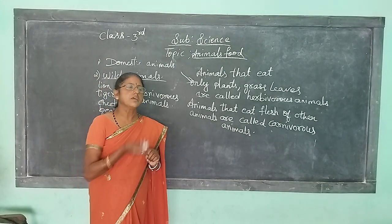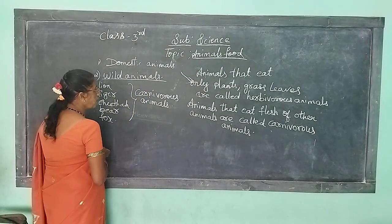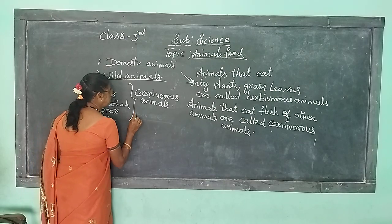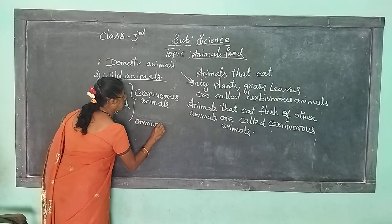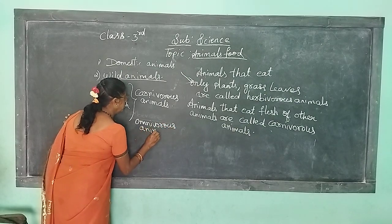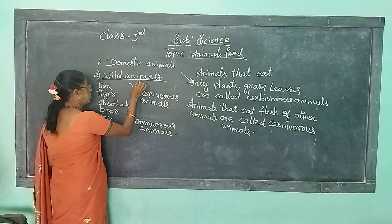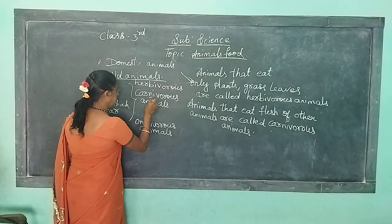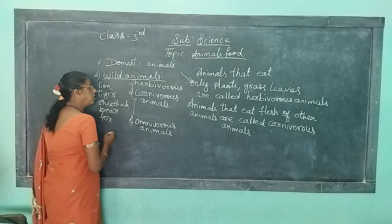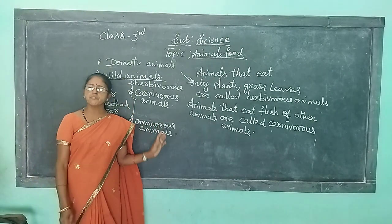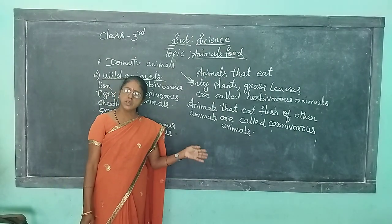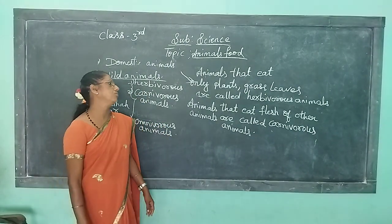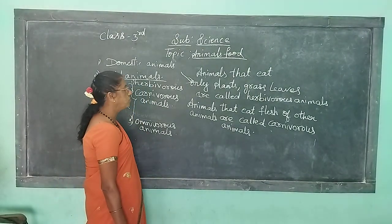Next, there is another type called omnivorous animals. First is herbivorous, second is carnivorous, and now third is omnivorous animals. We call them omnivorous animals because they will eat both plants, grass, leaves, and also flesh of other animals.